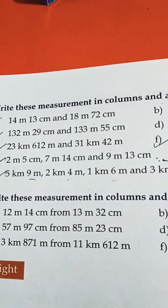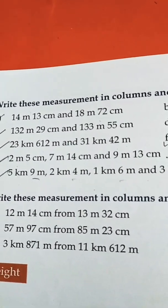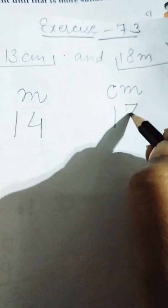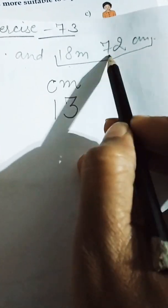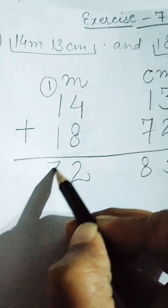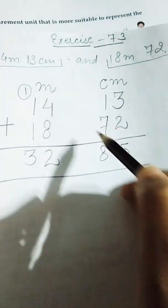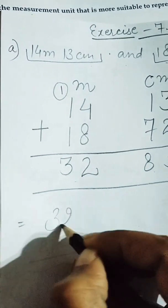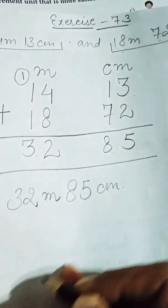Yes, see how to solve this. This is the first statement and this is the second statement. Firstly we will write meter and centimeter: 14 meter 13 centimeter, then we will add 18 meter 72 centimeter. Here: 3 plus 2 is 5, 7 plus 1 is 8, giving 85, and 4 plus 8 is 12 with 1 carry, giving 3. So here we got 32 meter 85 centimeter.